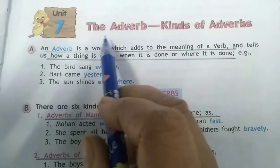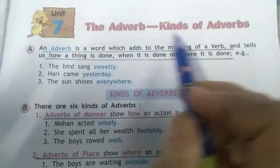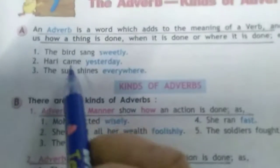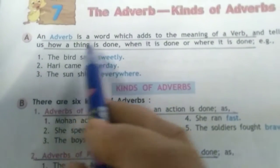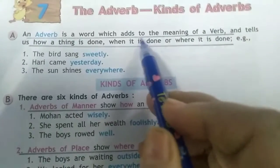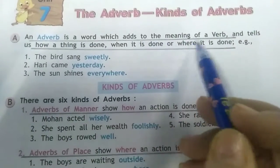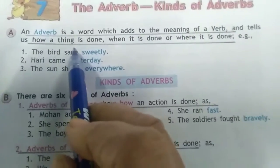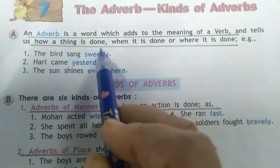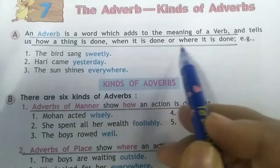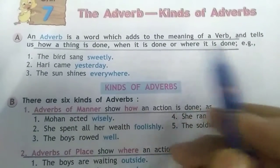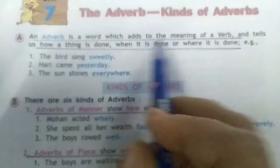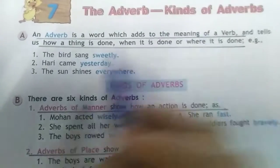Let's study adverbs — the kinds of adverb, Chapter 7. An adverb is a word that adds to the meaning of a word and tells us how a thing is done, where it is done, and when it is done. So, an adverb gives meaning to a word.